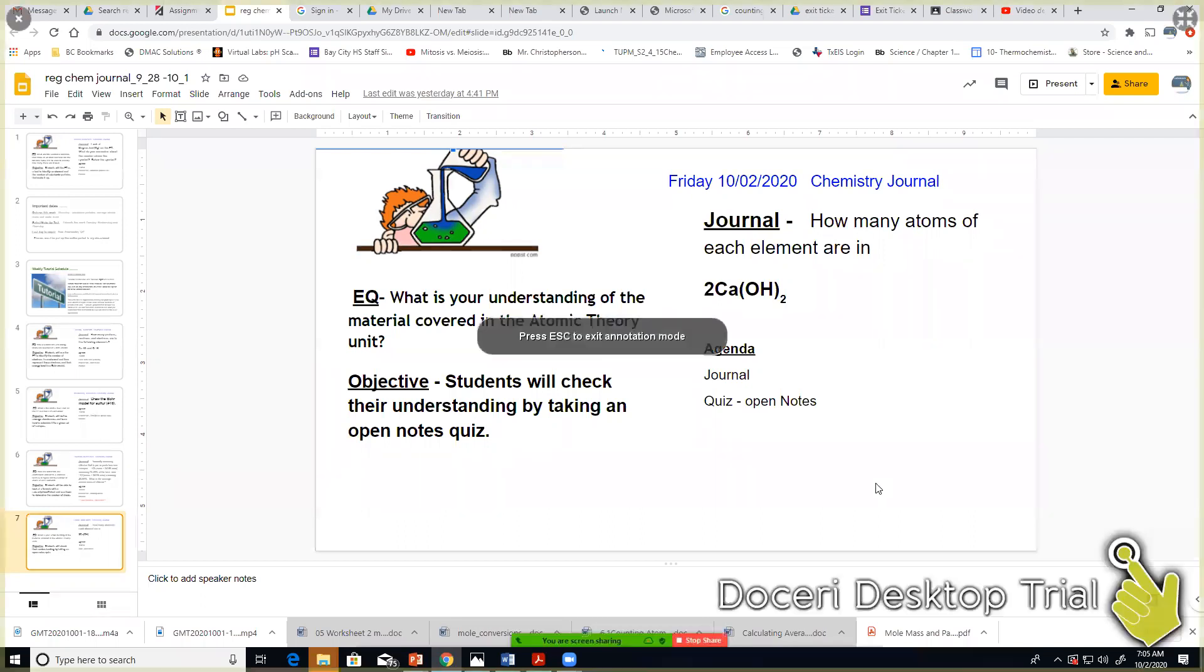So if we look at that one, I have three capitals, so that means I have three elements: calcium, oxygen, and hydrogen.